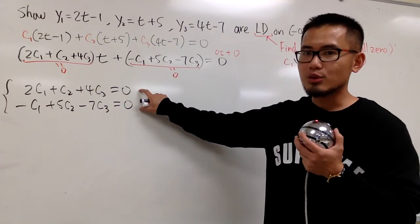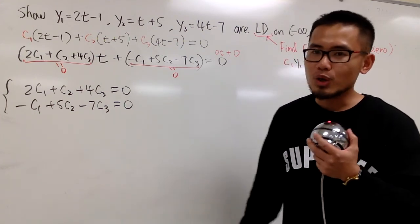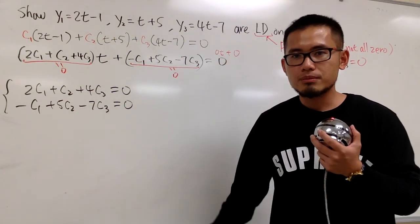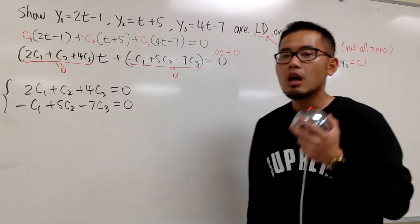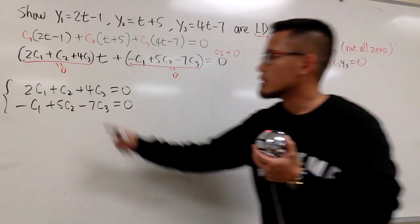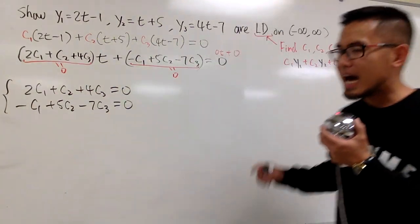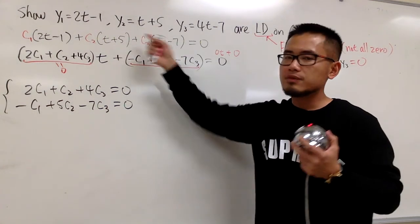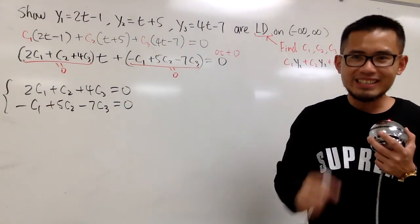And you know you have a solution to this. Because on the right-hand side, you have 0. Worst comes worst, you know c1, c2, c3 can always be 0, and then that will be true. But that defeats the purpose. I want to find c1, c2, c3 NOT 0 to show you that these functions are LD.